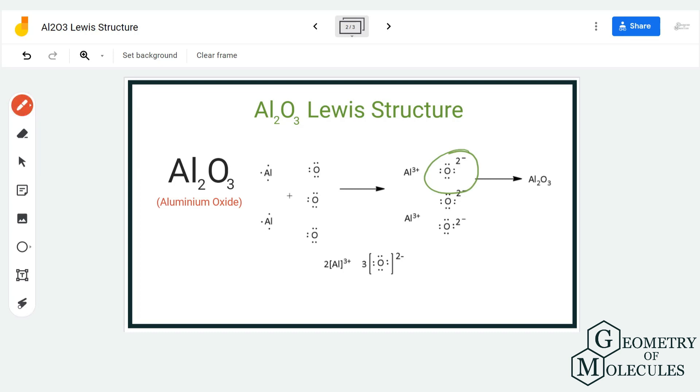Now if you have to write the Lewis structure for this, you can write like this: Al has a plus three charge and O has minus two charge. You have to write the coefficients though, as there are two aluminum atoms, write two over here, and as there are three oxygen atoms, write three over here.